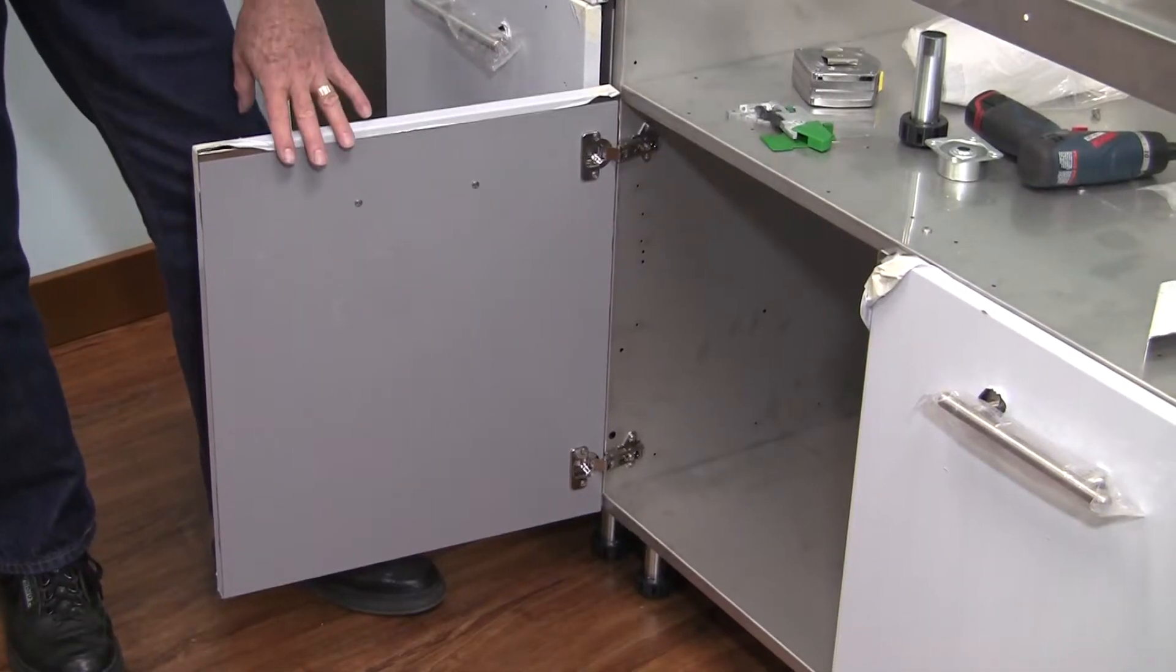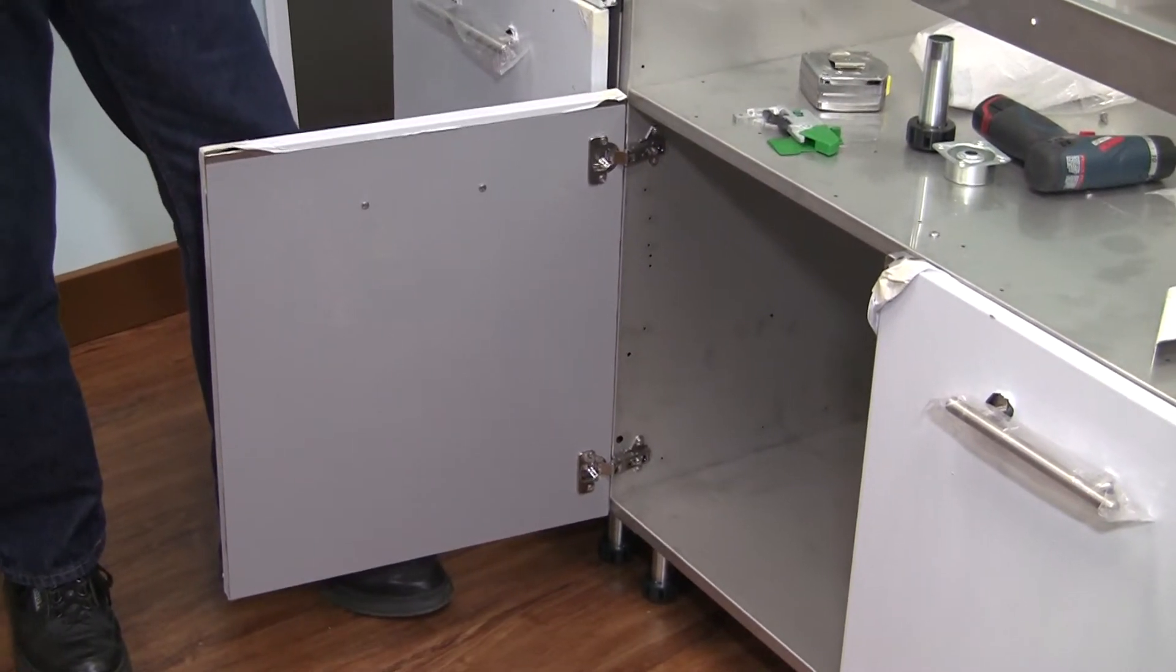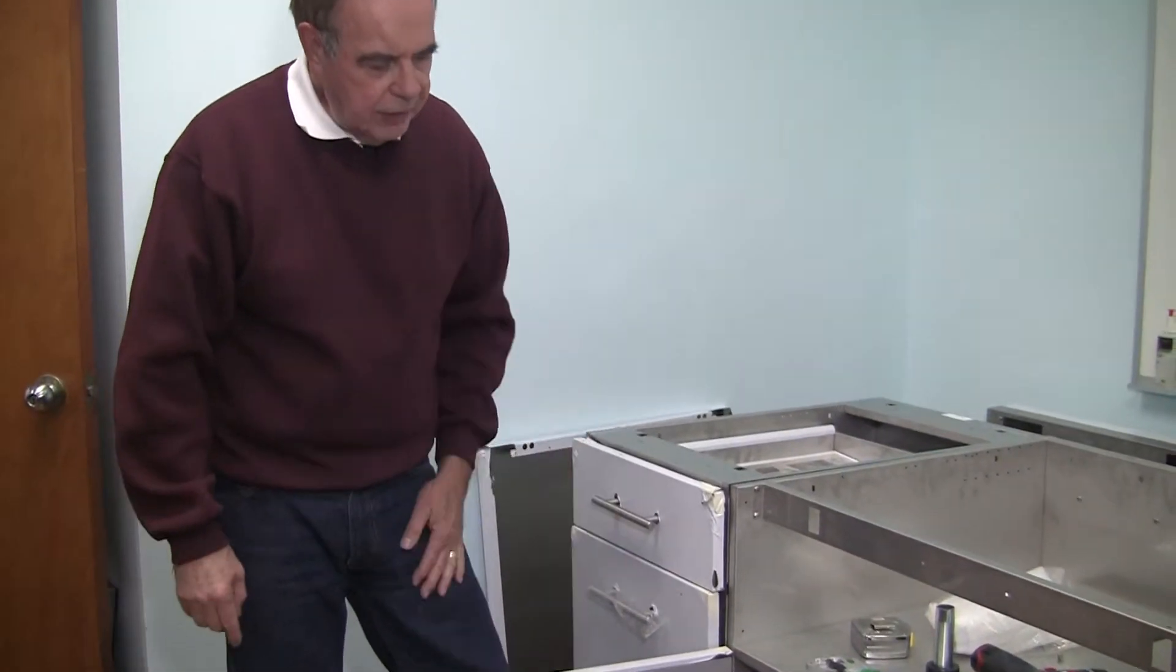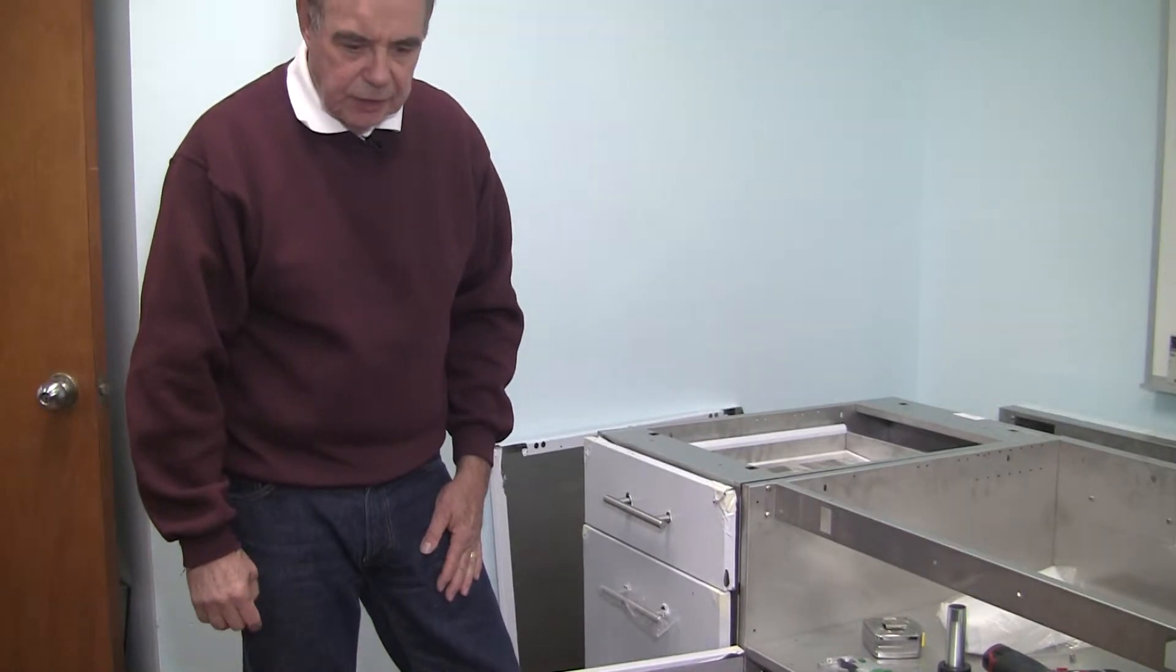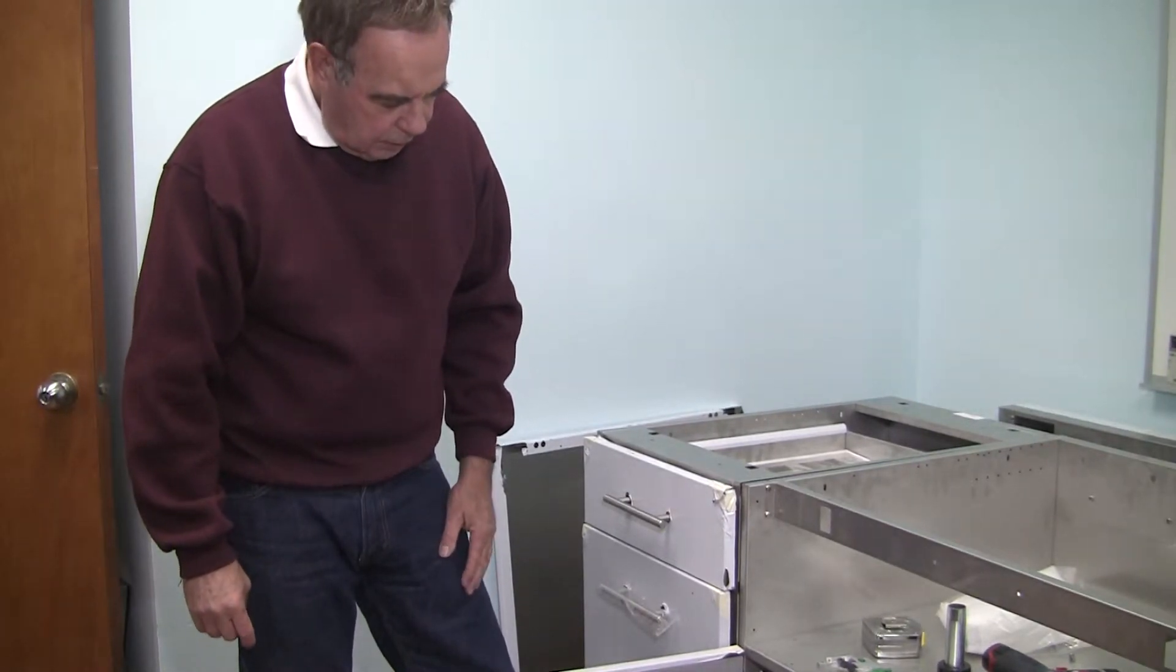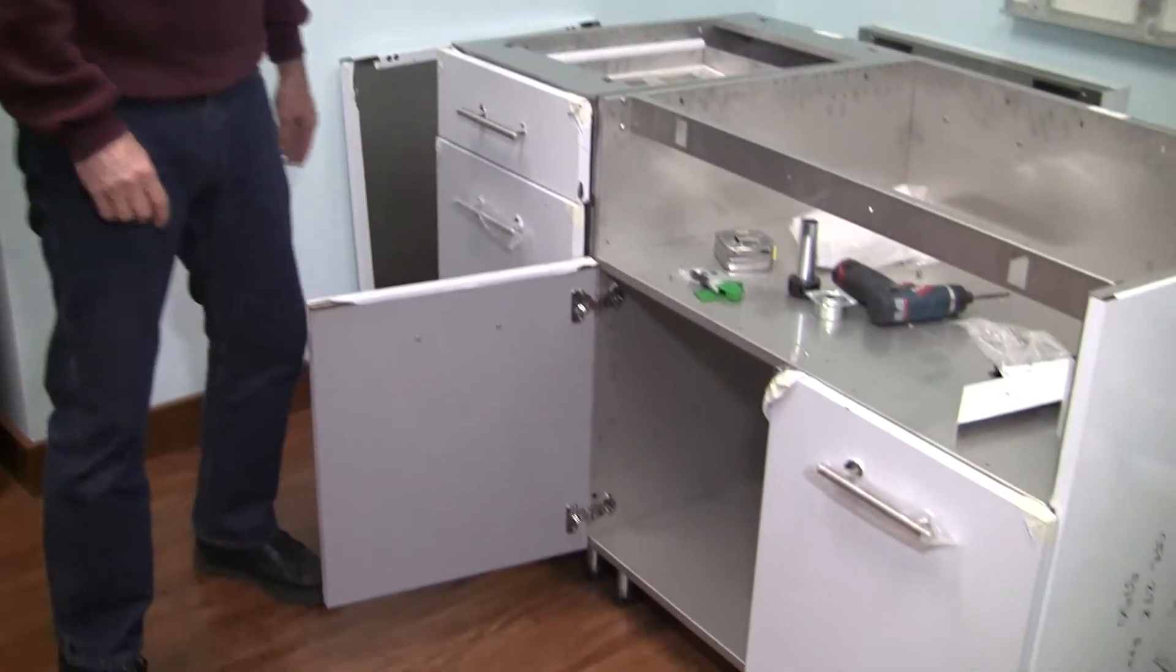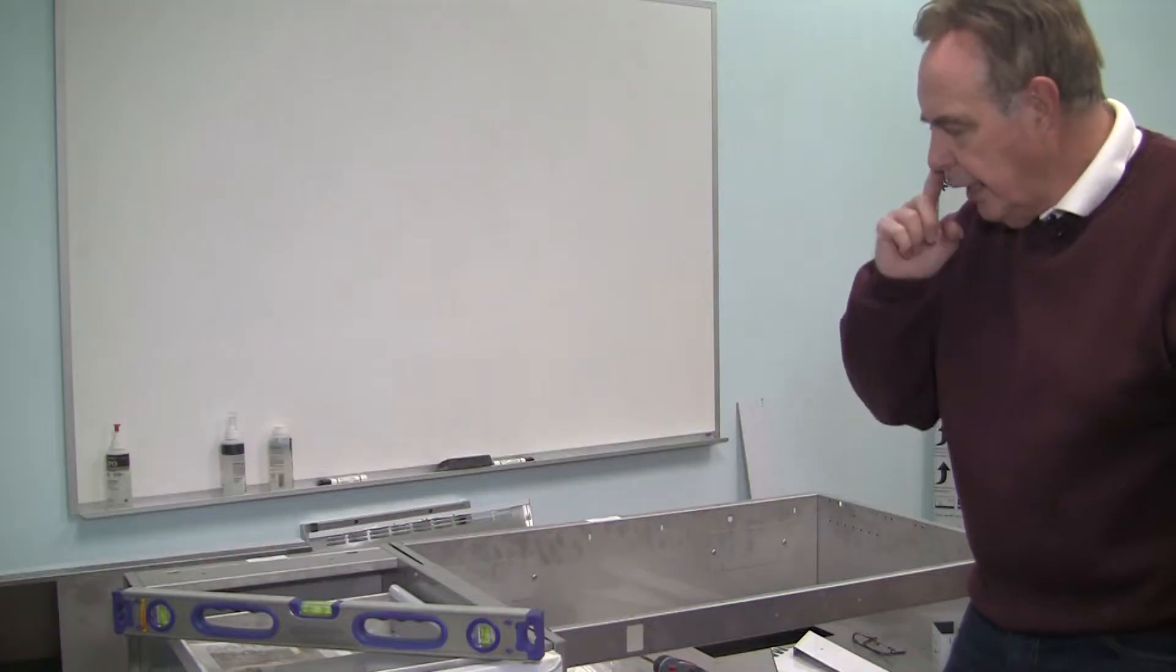Now, the doors. The cabinets come with the drawers already assembled. The doors will have bubble wrap and will be placed inside the cabinet for protection during shipment. These will go on after you have assembled all of your cabinetry.